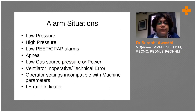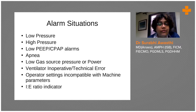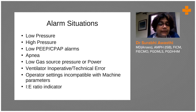What are the different types of alarms? You have a high pressure alarm, a low pressure alarm, a low peak pressure alarm, an apnea alarm, a low gas or oxygen supply alarm, a technical error, operation settings incompatible with the parameters, and I:E ratio indicators. We'll go through all of these.